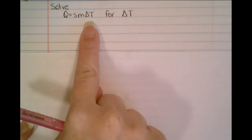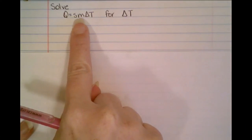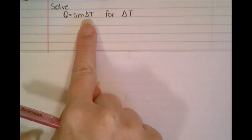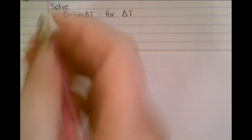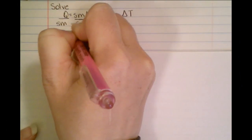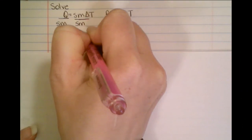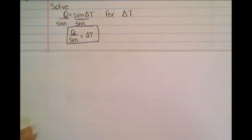Well, if I want to get delta T all by itself, I have to get rid of everything that's in front of it. So if all three of these are smashed together, that means they're multiplied together. So what is the opposite of multiplication? Division. So I want to divide both sides by everything that's in front of that delta T. So that means I'm going to get Q over SM equals delta T. And you're finished.